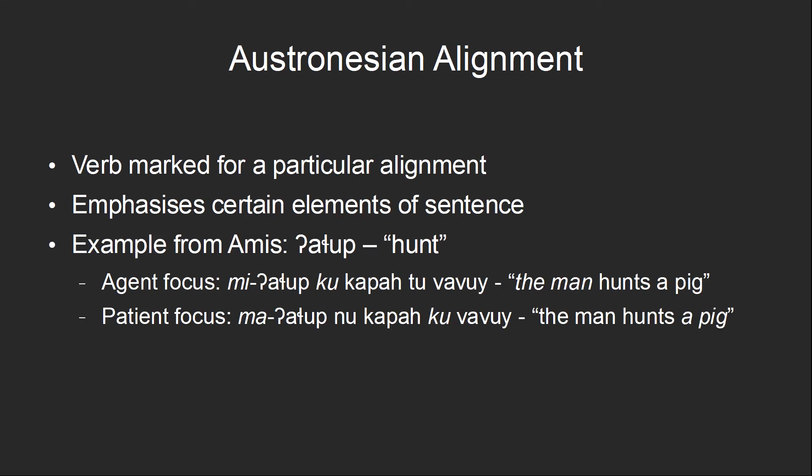Finally, there is Austronesian alignment, which is often difficult for people to grasp even when they otherwise understand alignment quite well. In Austronesian alignment, the verb is marked with a prefix or suffix which indicates the alignment that the sentence is using, and different alignments are used to emphasize certain elements of the sentence. As the name suggests, Austronesian alignment is found among the Austronesian languages. This is an example from the Amis language spoken in Taiwan, using the verb meaning 'hunt.'